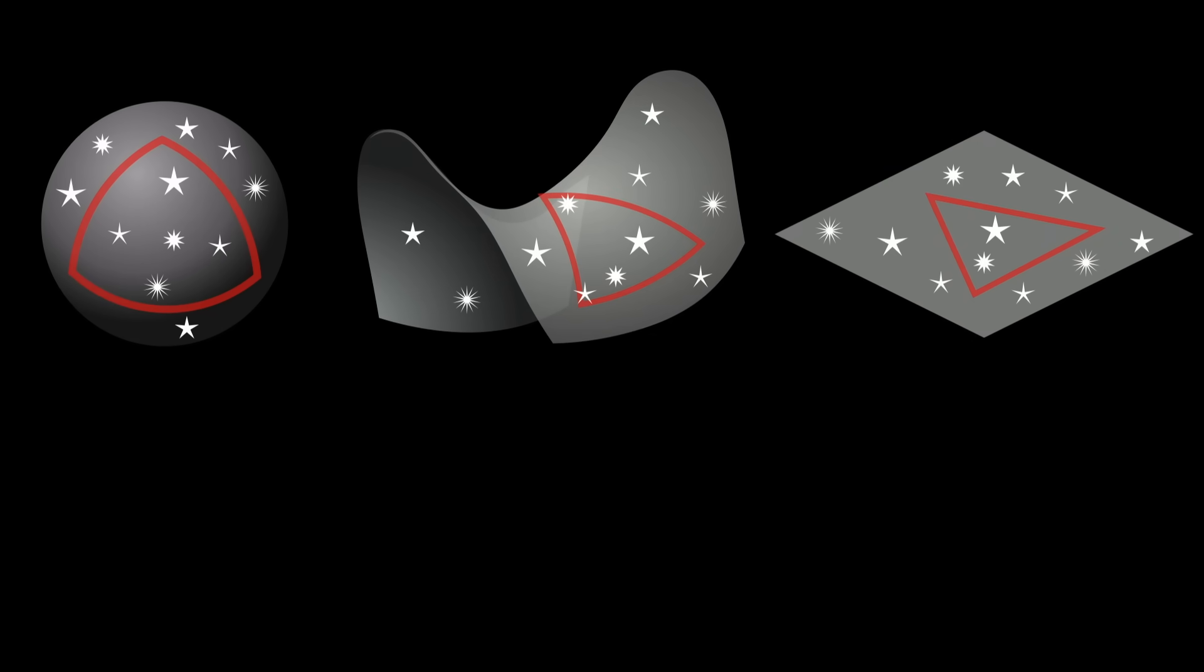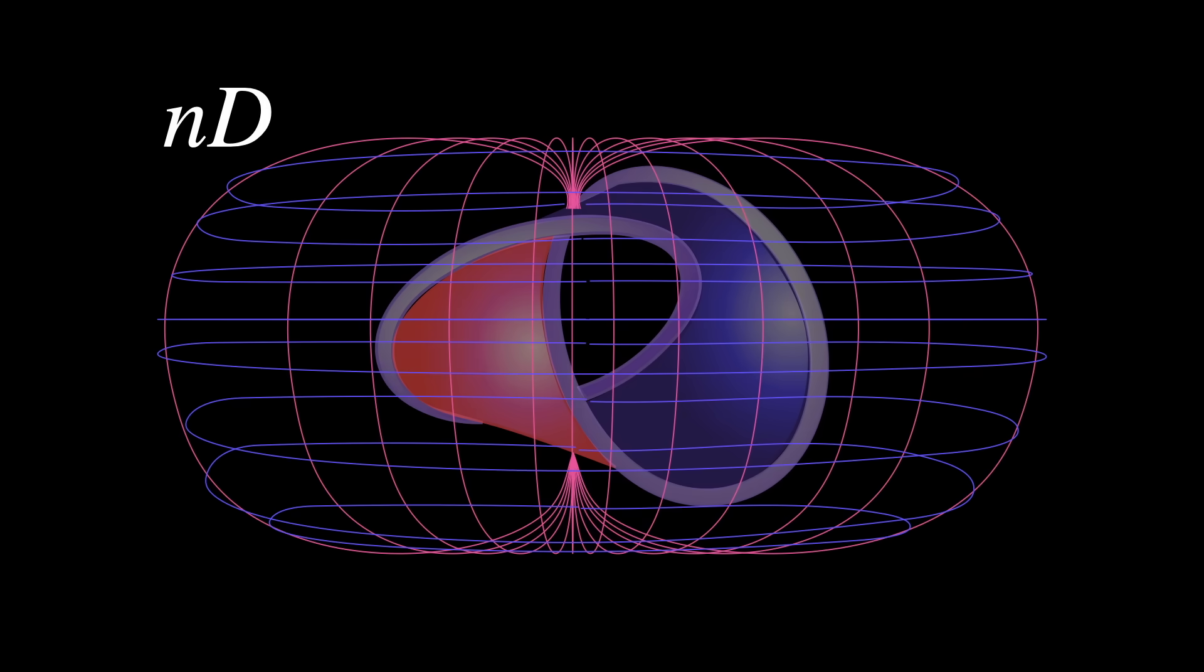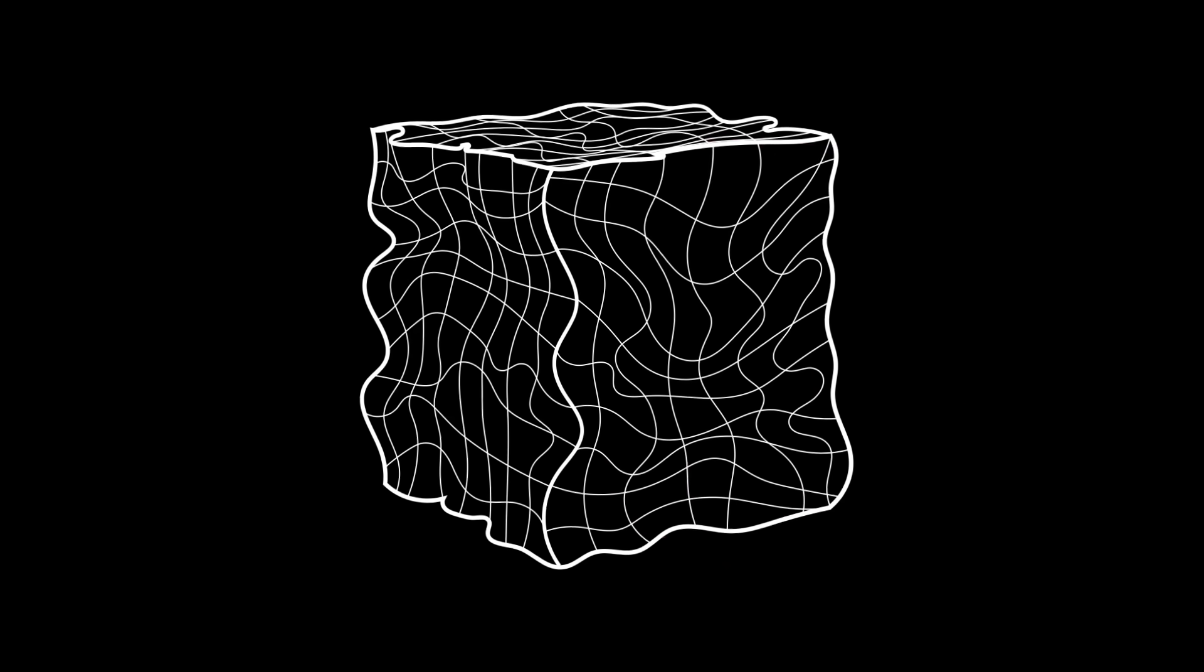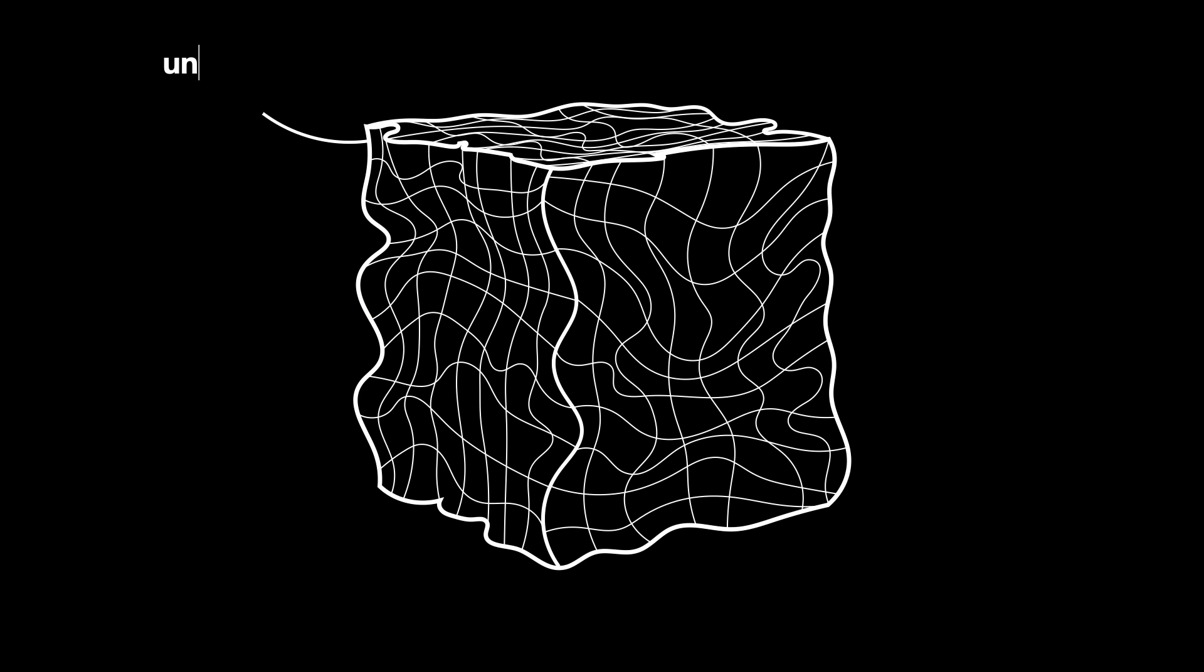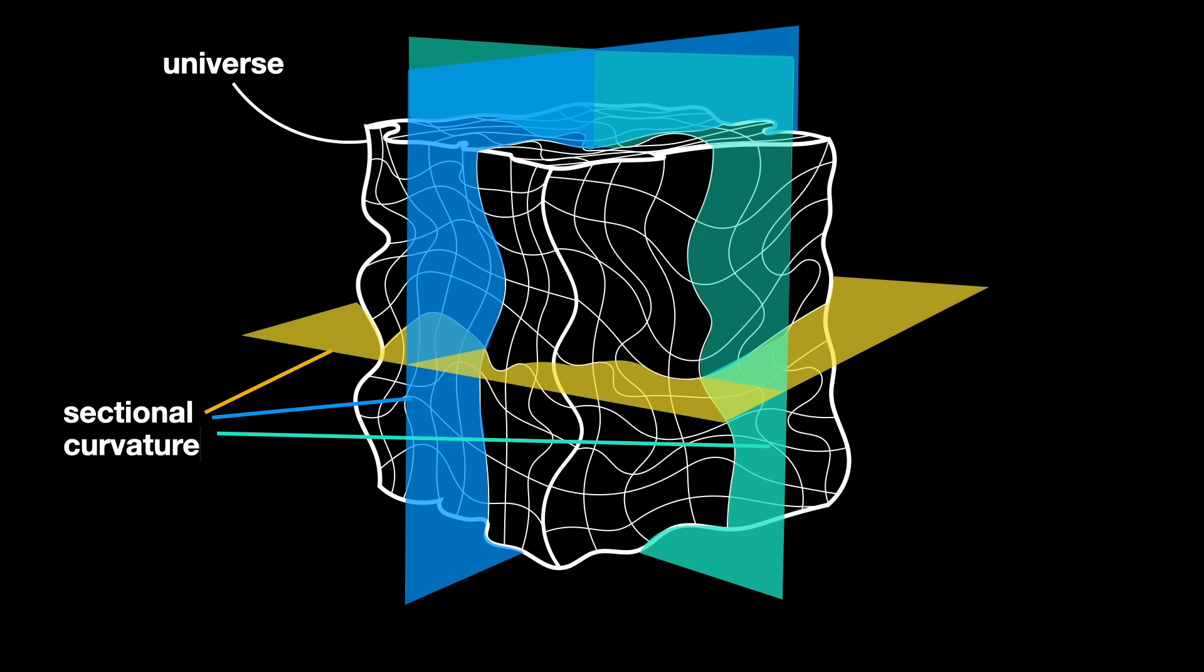Gaussian curvature is usually denoted with a capital K. Even though Gaussian curvature is defined only for two-dimensional surfaces, its core idea, measuring how a space bends, can be generalized to higher dimensions. In cosmology, we apply the same principles to three-dimensional spaces, or 4D spacetime, using tools like sectional curvature and Ricci curvature to describe how the universe bends at each point.